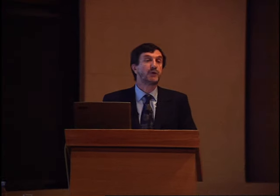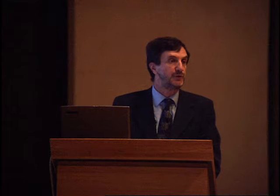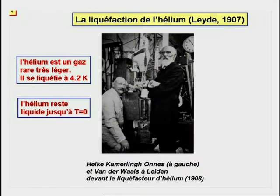C'est avec la liquéfaction de l'hélium obtenue à l'université de Leiden en Hollande en 1907 qu'on peut dater le début de la physique de la recherche sur les très basses températures. L'hélium est un gaz très rare, très léger, et sa liquéfaction se produit à des températures extrêmement basses, quelques degrés Kelvin au-dessus du zéro absolu.